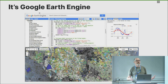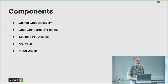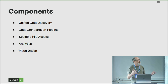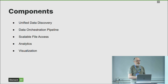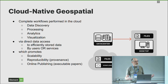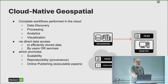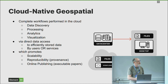Google Earth Engine really showed what could be done with processing big data in the cloud. It has a few different components: unified data discovery so you can search across multiple different datasets; an orchestration pipeline they use to ingest and process data; scalable file access (we don't really know how that works on Google Earth Engine); scalable analytics at planetary scale; and visualization. These components make up cloud native geospatial — complete workflows performed in the cloud, from data discovery and processing through analytics to visualization, with direct data access to efficiently reach stored data, and the ability to scale.